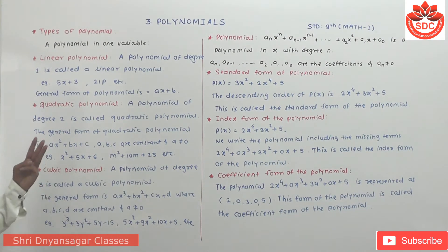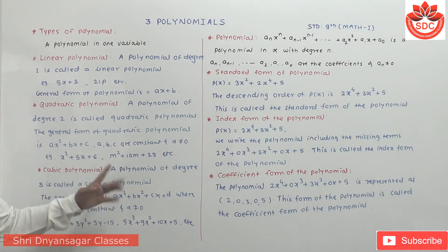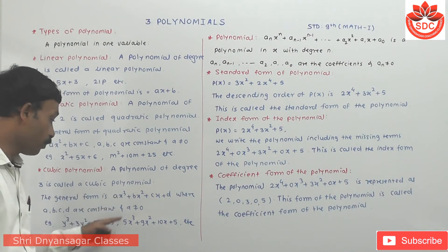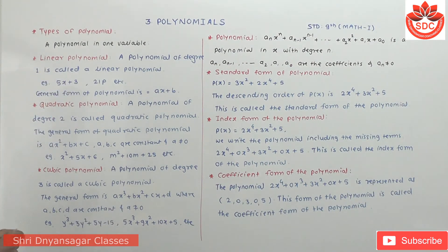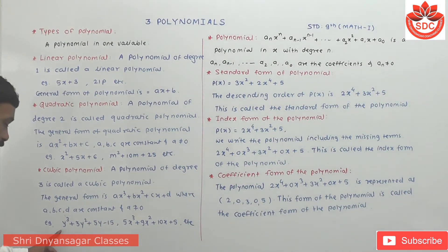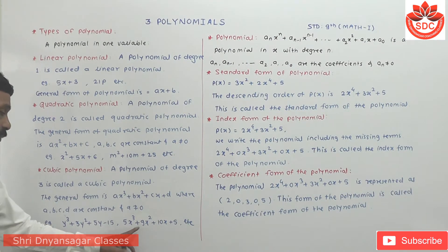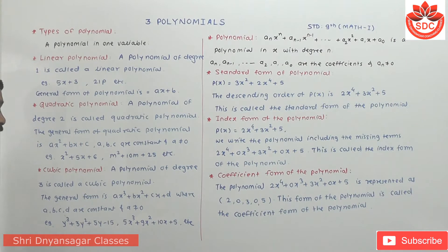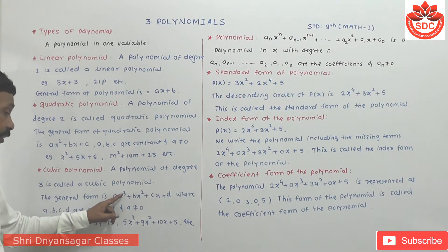Cubic polynomial: a polynomial of degree 3 is called as the cubic polynomial. The general form is ax³ + bx² + cx + d = 0, where a, b, c, d are constants and a ≠ 0. For example: y³ + 3y² + 5y − 15, and 5ax³ + 9x² + 10x + 5. In a cubic polynomial there are 4 terms and degree is 3.